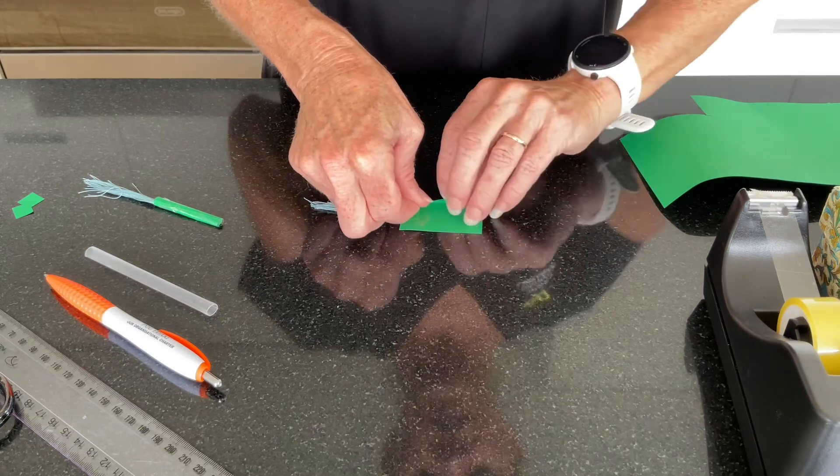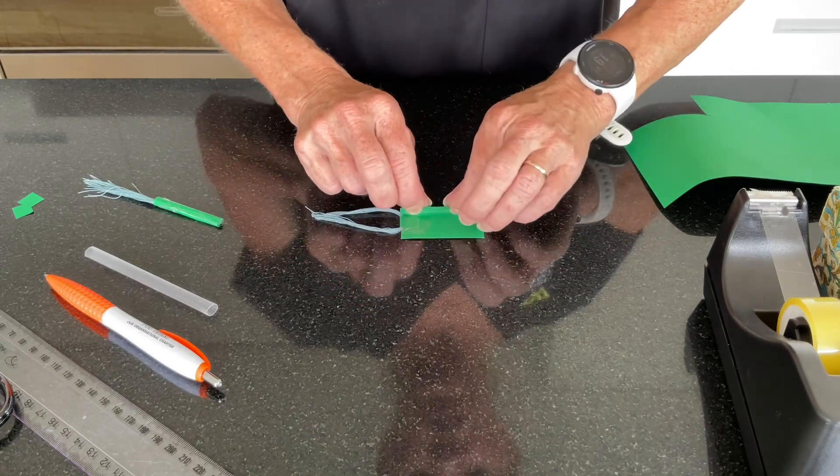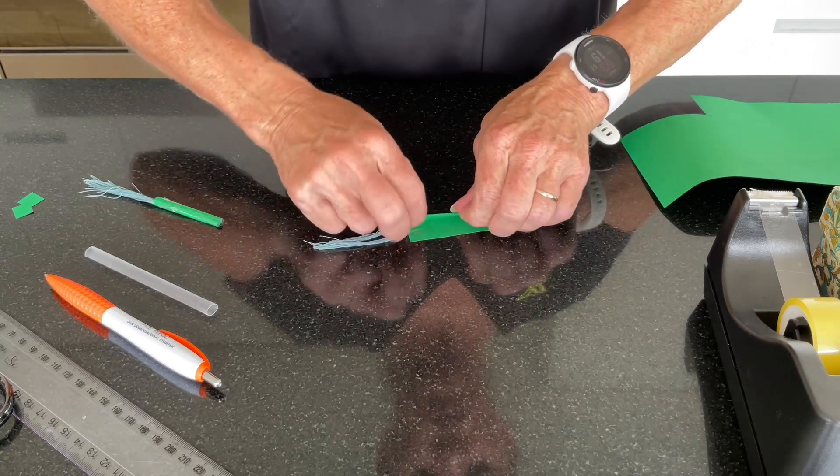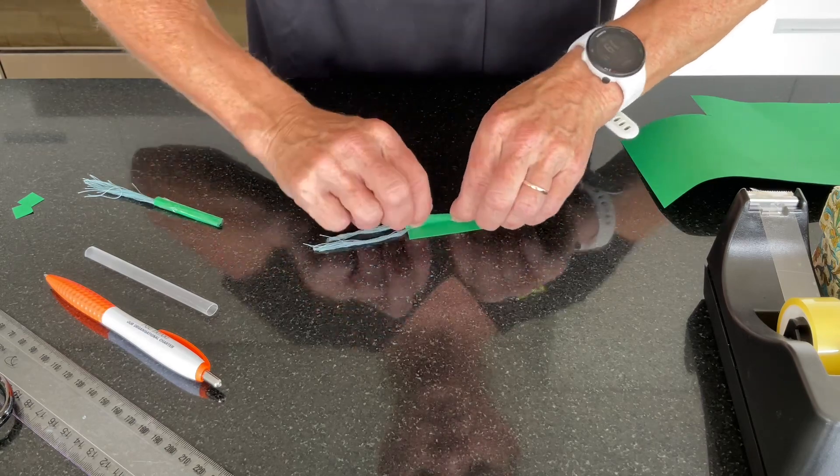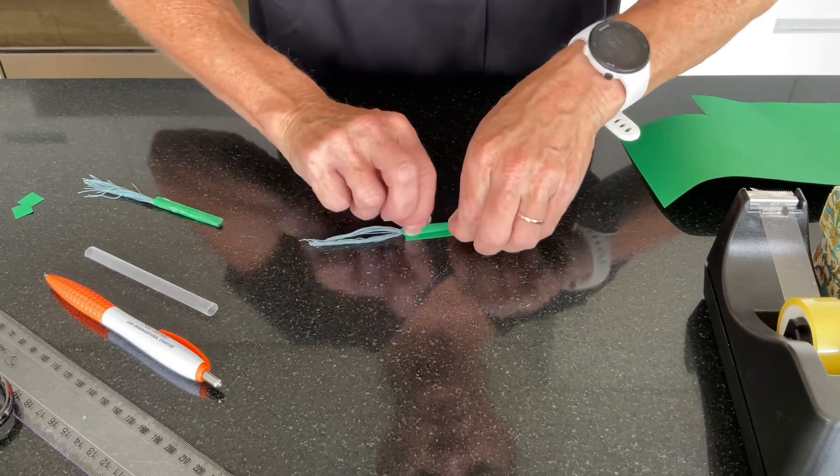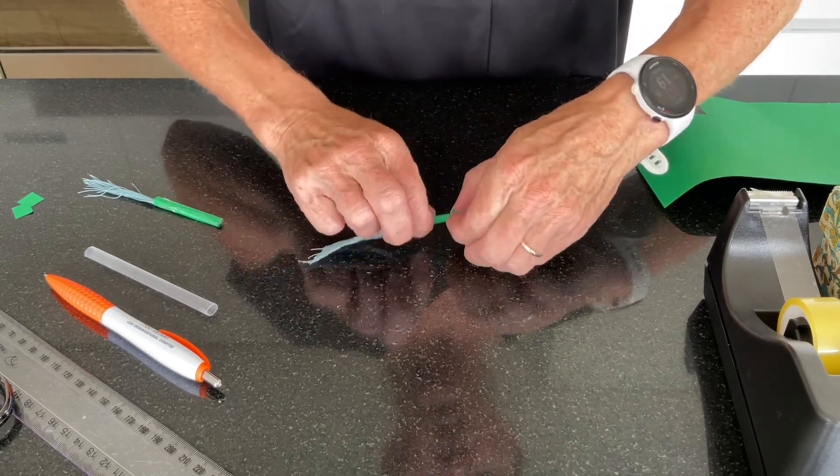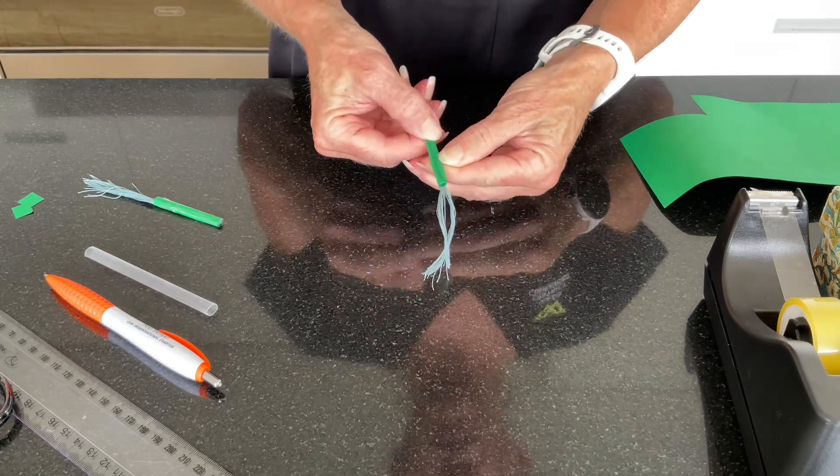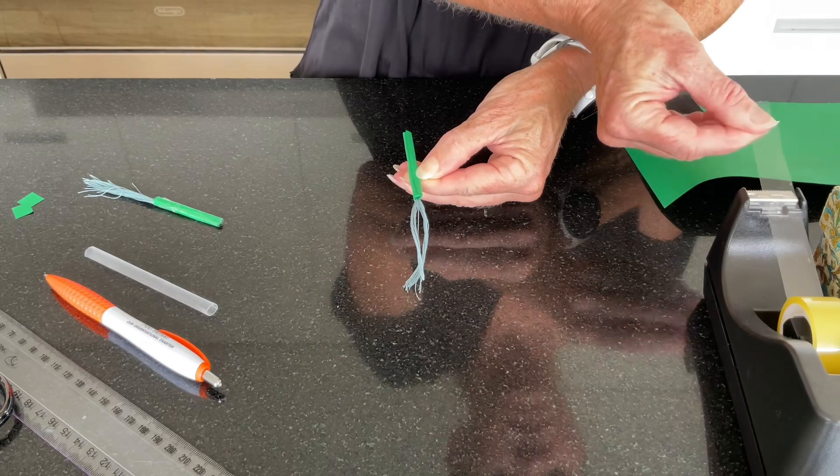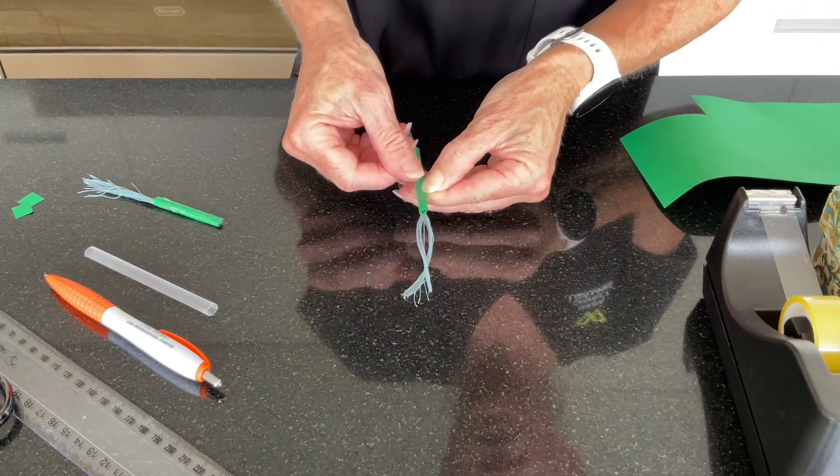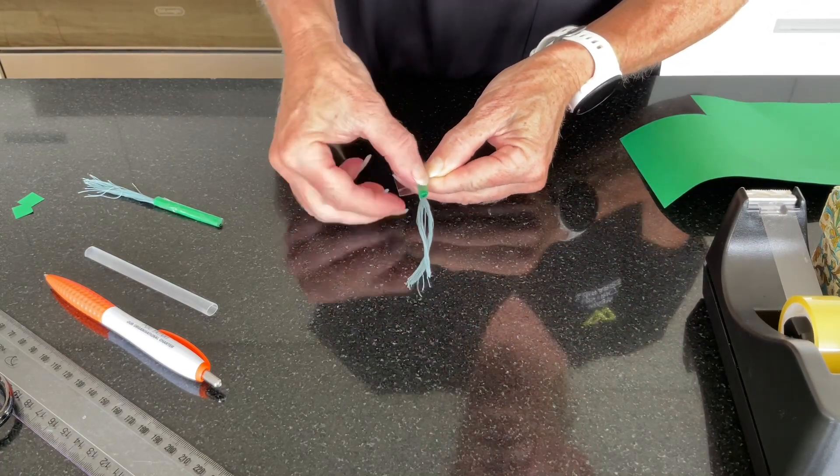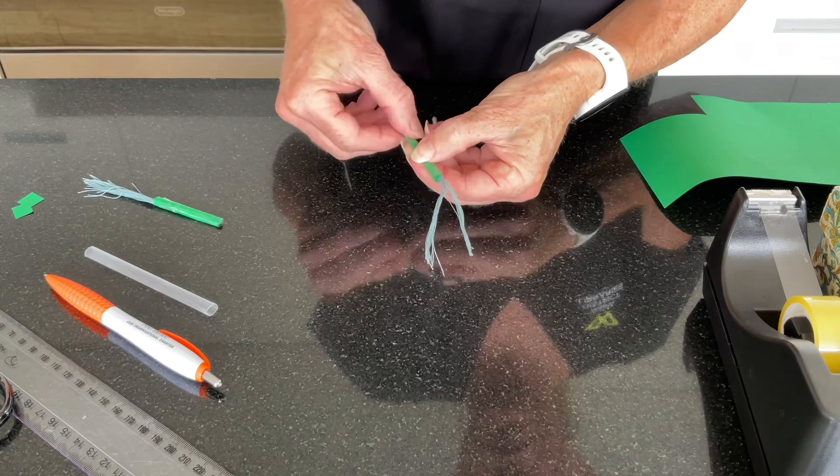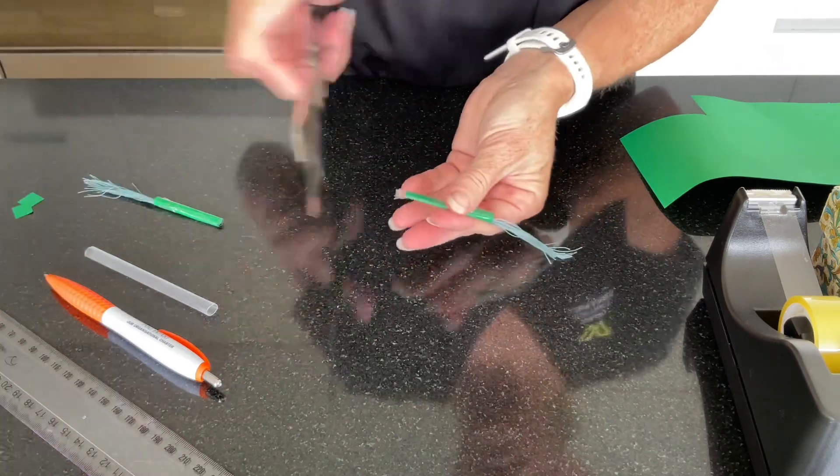Now, as best you can, roll the piece of cardboard as tightly as you possibly can. Then when you get to the end, take a longer piece of tape and tape it along the seal. You can trim it if you need to.